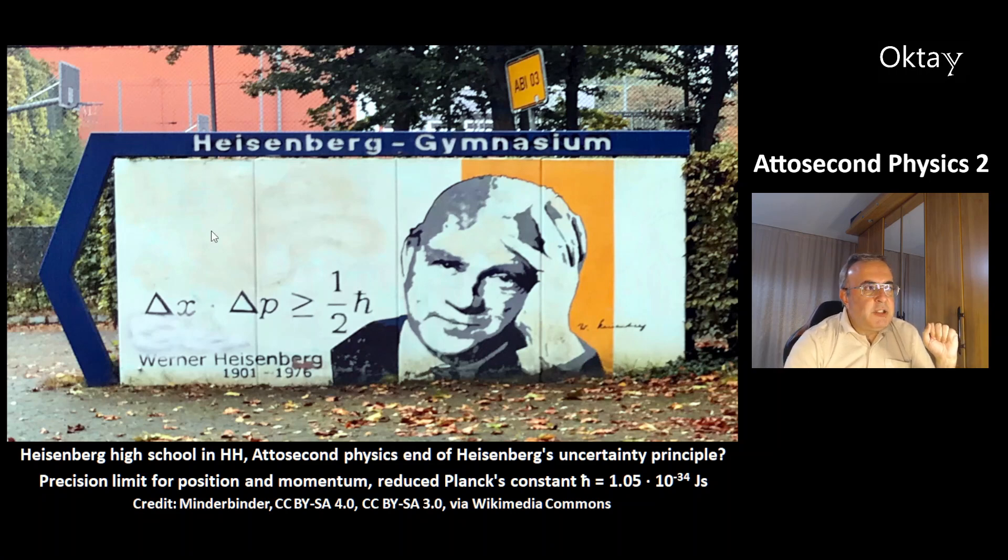This is the equation of the Heisenberg's uncertainty principle. Delta x times delta p is not lower than one half h-bar. This equation describes the precision limit for position and momentum. Position is x, momentum is p. And h-bar is the reduced Planck's constant. It is 1.05 times 10 to the minus 34 joule seconds.